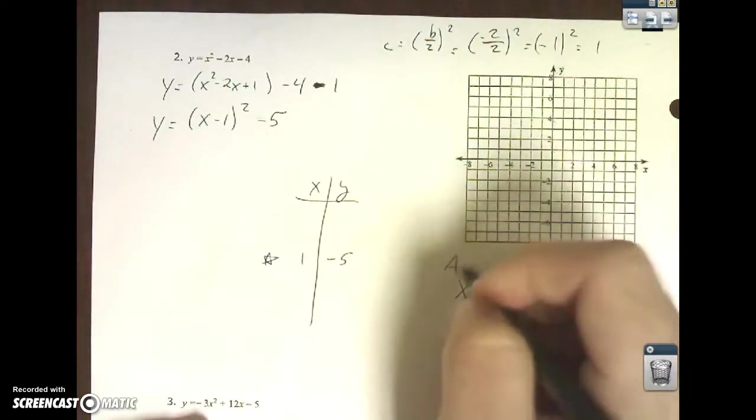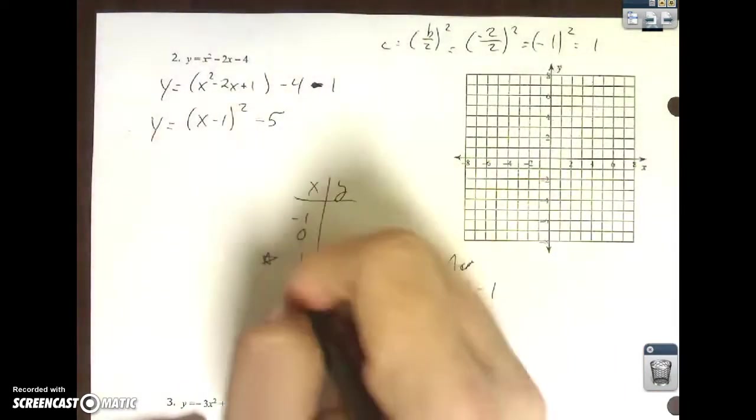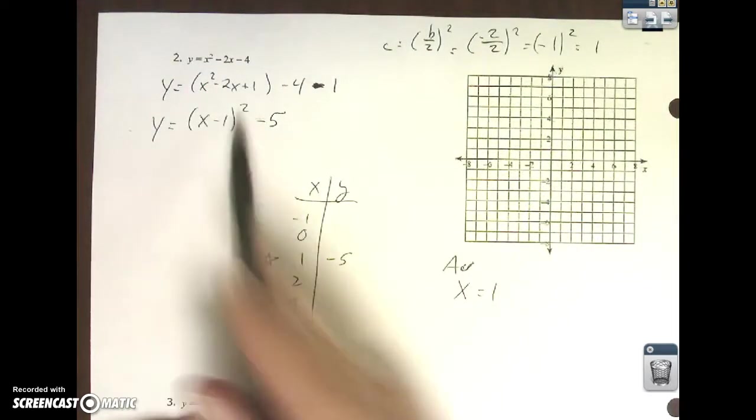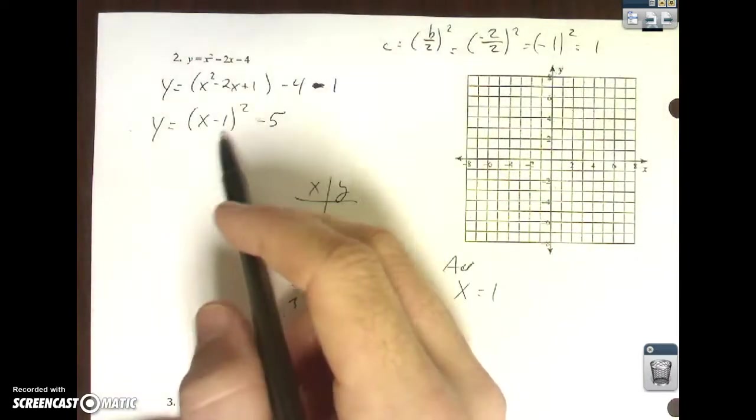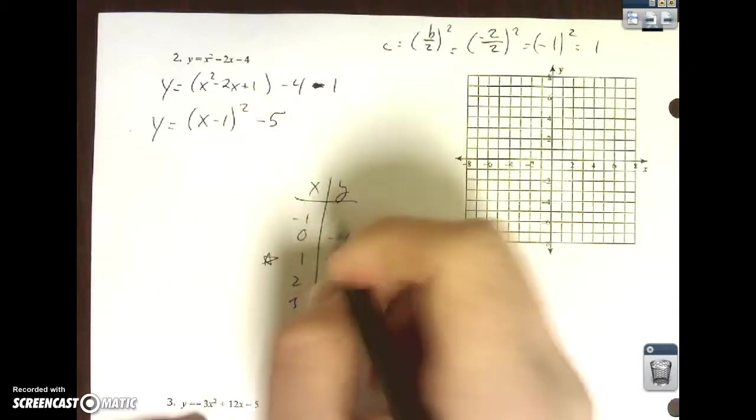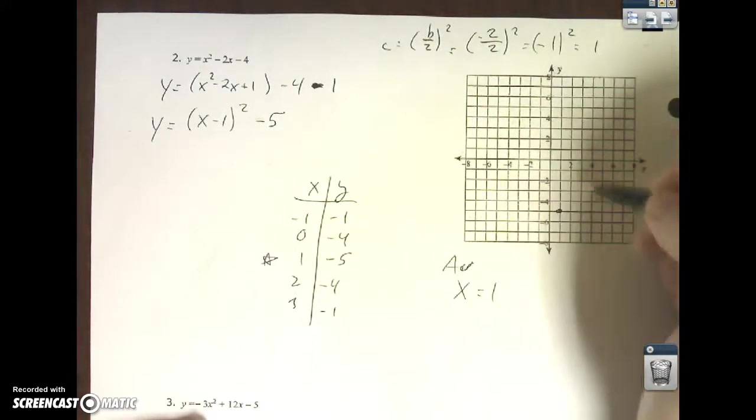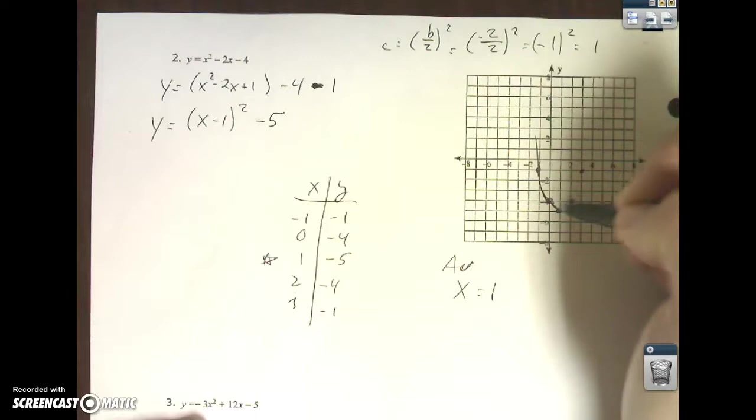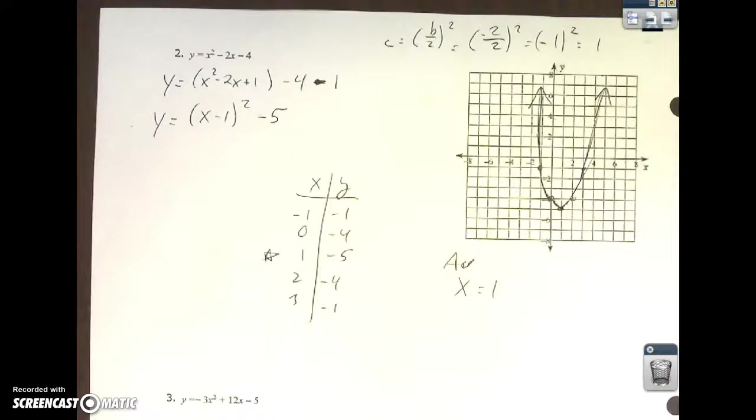Again, this is very nice because it puts it into vertex form. So, my vertex is 1 negative 5, meaning my AOS is x equals 1. So, I go back. I go forward. Put another 2 here. 2 minus 1 squared is 1. 1 squared is 1. Minus 5 is negative 4. 3 minus 1 is 2. 2 squared is 4. Minus 5 is negative 1. Connect those dots. And we're good.